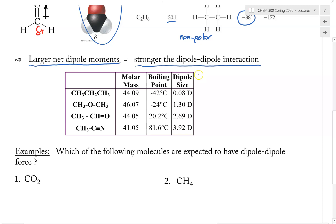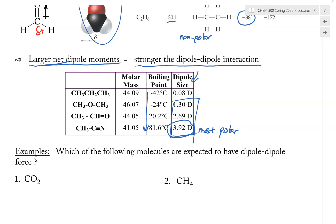Calculating the exact value of the net dipole moment is not the focus of this class. However, the size of the net dipole moment is given in units of D (Debye). The higher the value, the larger the net dipole moment. We can see that acetonitrile has the biggest net dipole moment, meaning it is the most polar. And looking at the boiling points, the boiling point is increasing, and acetonitrile has the highest boiling point because it is the most polar molecule. So the more polar the molecule, the larger the net dipole moment, and the stronger the dipole-dipole force — and therefore the higher the boiling point and melting point.